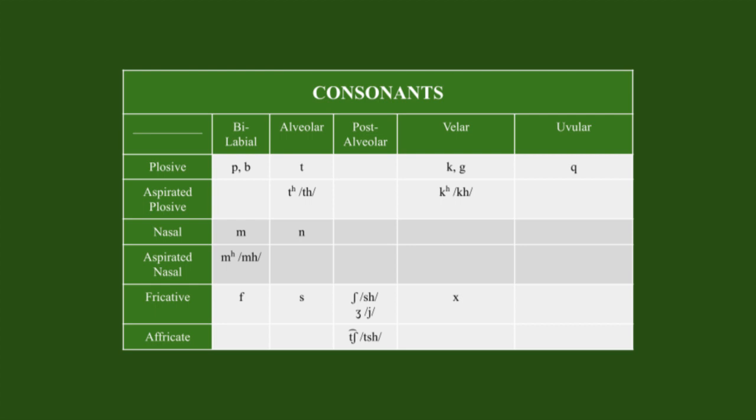Due to evolution, a lot of the plosives have become aspirated, merging with H. In addition, one of the nasals, M, also has an aspirated variant. Something else to look at is the dual fricatives of SH and J. The reason there are two is because of S — S becomes SH before E. K transitions into CH in the same situation, making an interesting chart.